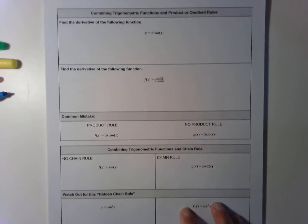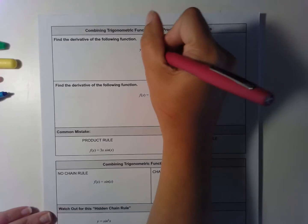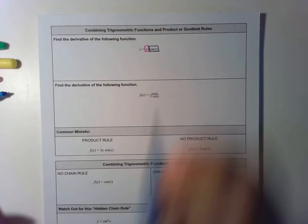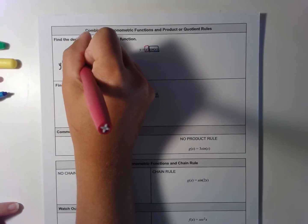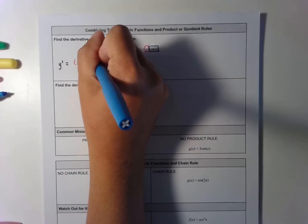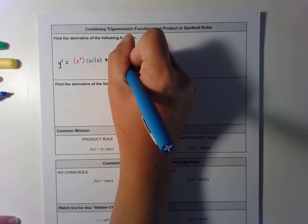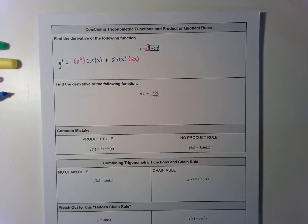One thing that makes this trickier is when we start combining rules we've already learned with these new trig rules. We're going to do an example using product rule combined with trig functions. In this first problem I use product rule because I have x squared as my first function and sine of x as my second function. Using product rule: copy the first, x squared, times the derivative of the second — the derivative of sine is cosine — plus copy the second, sine, times the derivative of the first, which is 2x.